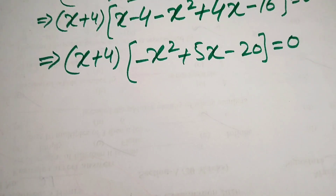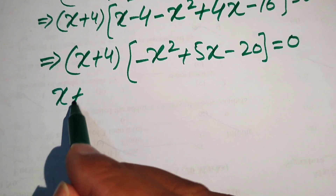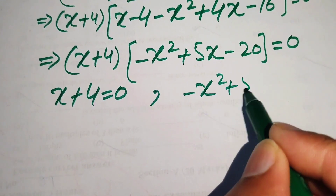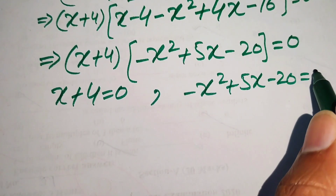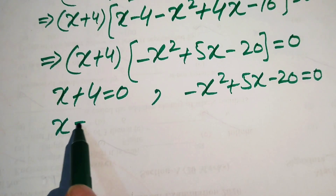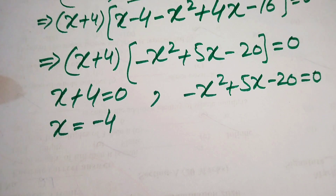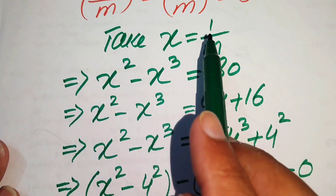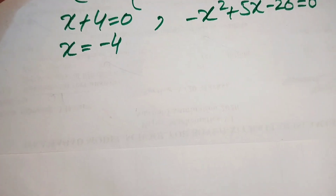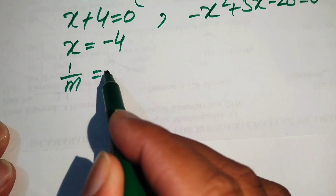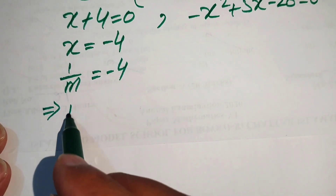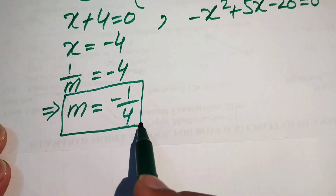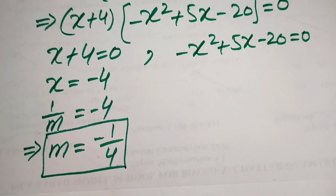We split into two cases. Case 1: x plus 4 equals 0, giving x equals minus 4. Back-substituting x equals 1/m, we have 1/m equals minus 4, so m equals minus 1/4. This is the first real solution of the given equation.